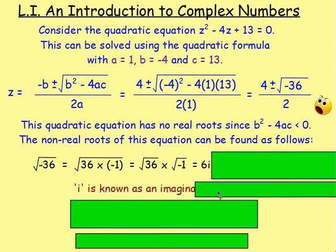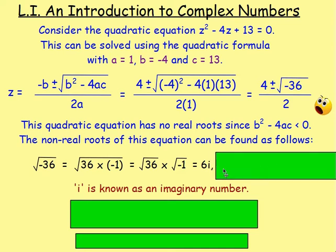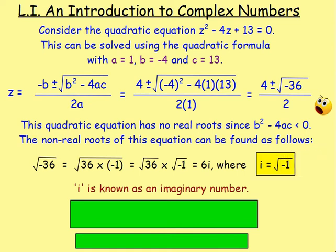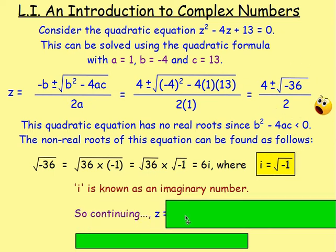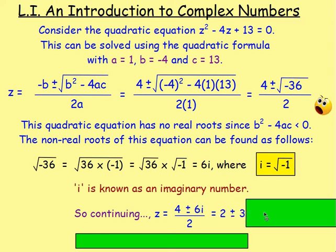The square root of negative 1 we can't work out, so we call it i — i for imaginary. i is an imaginary number representing √(−1). This allows us to continue. So z = (4 ± 6i) / 2, and dividing by 2 gives us 2 ± 3i.